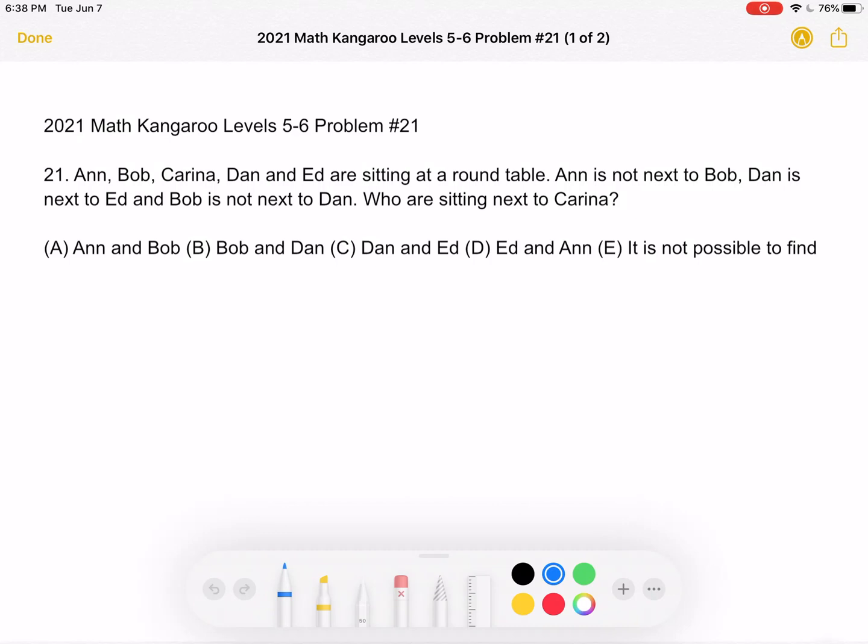A, Anne and Bob, B, Bob and Dan, C, Dan and Ed, D, Ed and Anne, or E, it is not possible to find. This is the problem as it originally appeared on the test,